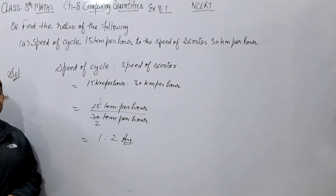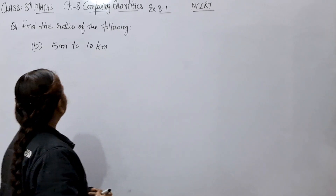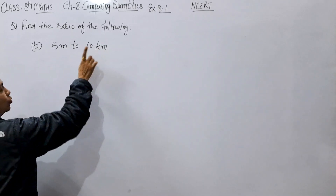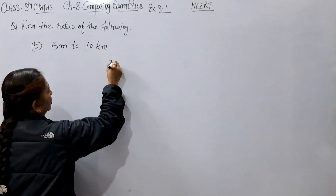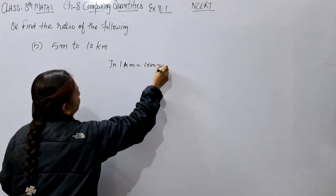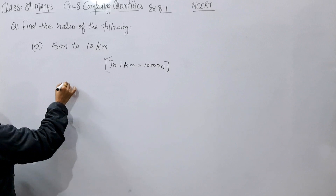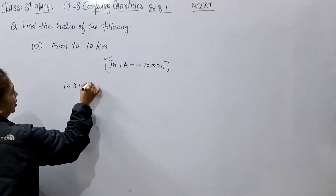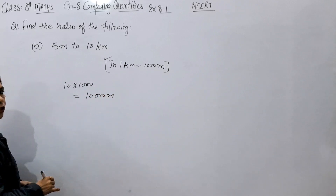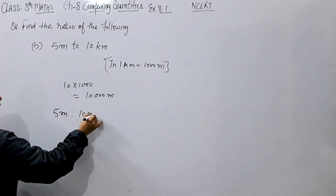Let's see part B: 5 meters to 10 kilometers. Here we have meters and kilometers, so we need to make the same unit. 1 kilometer equals 1000 meters, so we multiply 10 by 1000, which gives us 10,000 meters. Now we find the ratio: 5 meters to 10,000 meters.